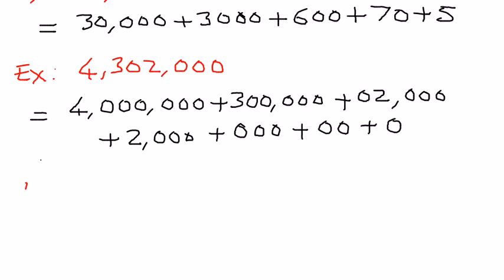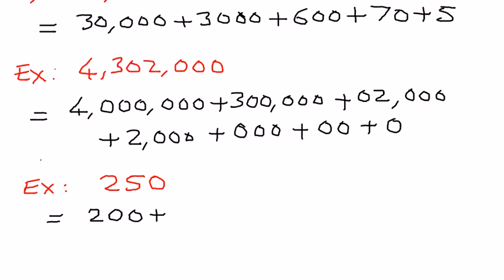Let's take another simple example. Let's say we have 250. The way we want to write it out in its expanded form is we write 200 first, and then 50. For the ones place, we put a 0. When we add 200 plus 50, it is going to be equal to 250, which is the same as the number we started off with.